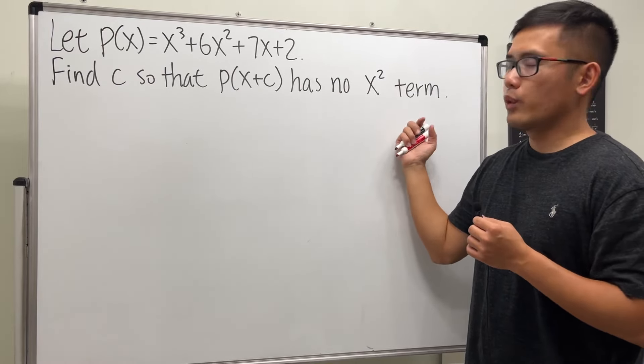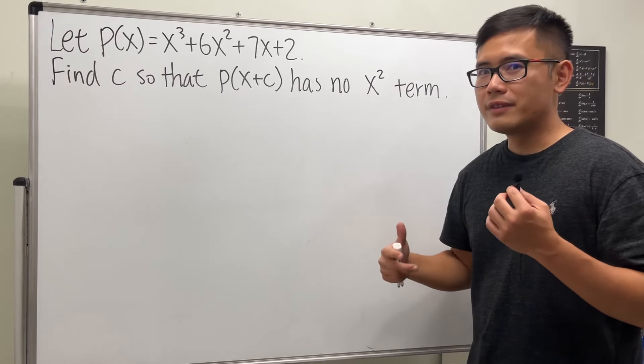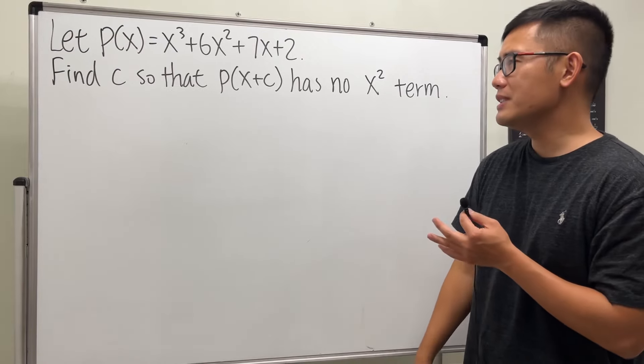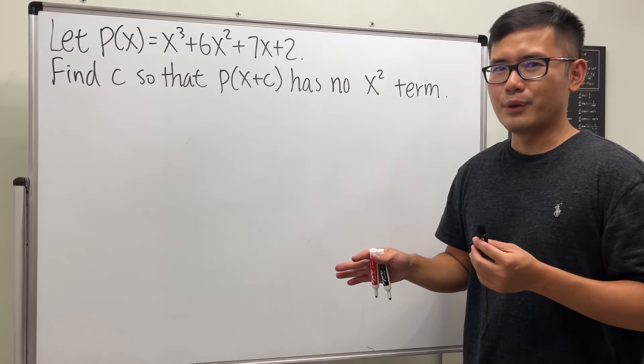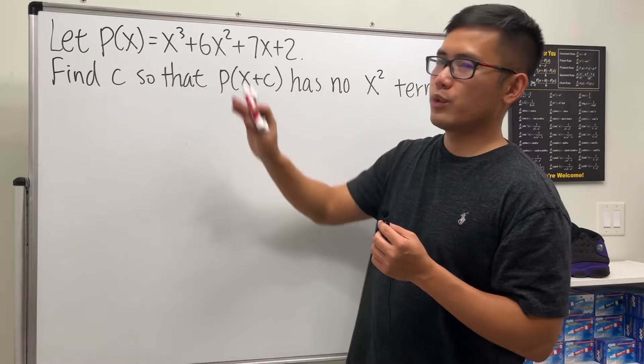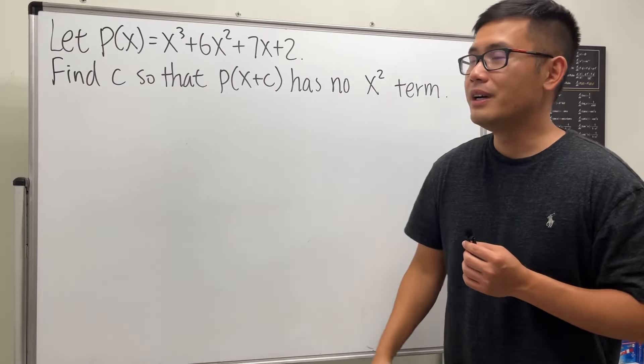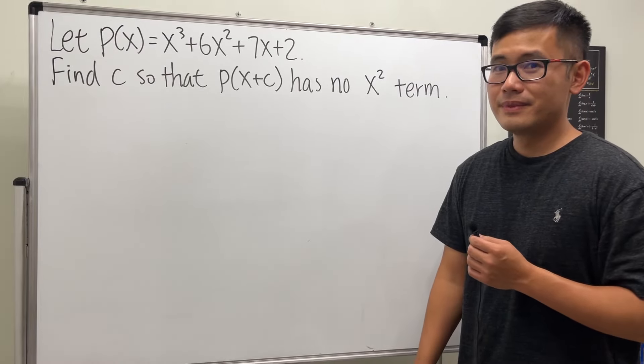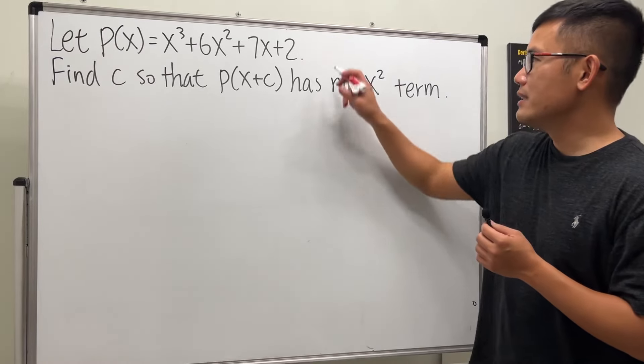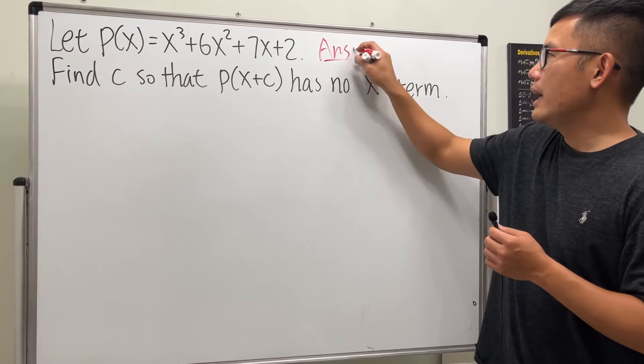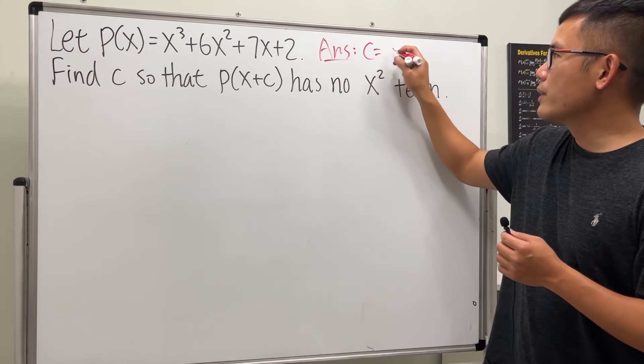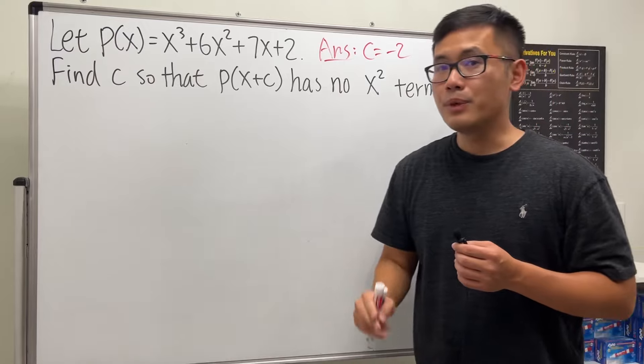For the people who have done the cubic formula before, you'll see that this has that flavor - you want to get rid of the x² term by finding the correct c. Please pause the video and try this first. Okay, I will tell you what the answer is: c equals -2. I'm going to show you two ways to do this.